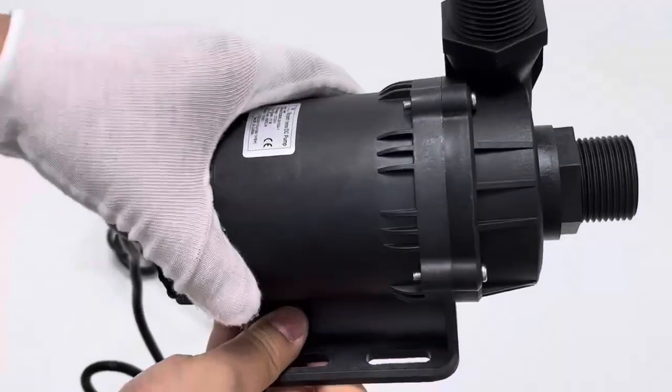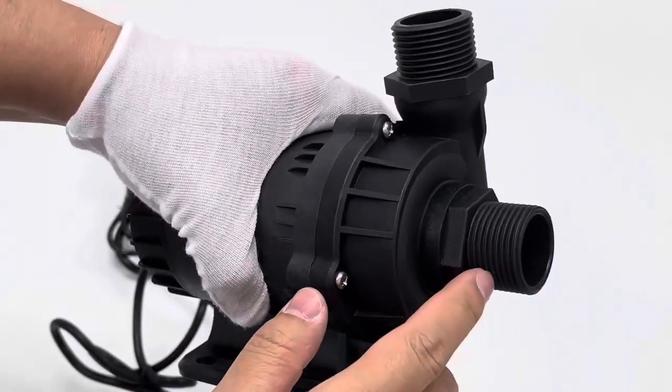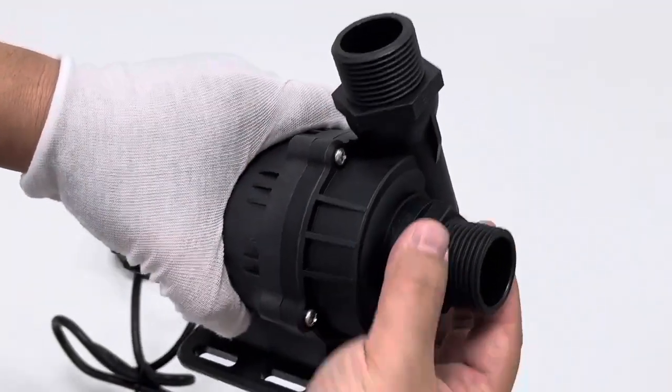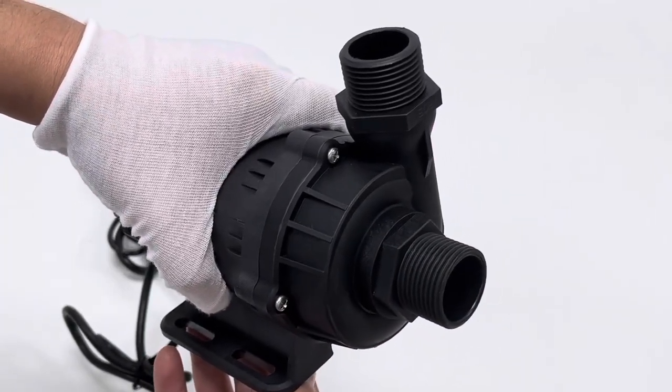Let's take a look at the appearance of this pump body. This is inlet, this is outlet. Both ports are threaded, one inch threaded, with external diameter about 32 millimeters.